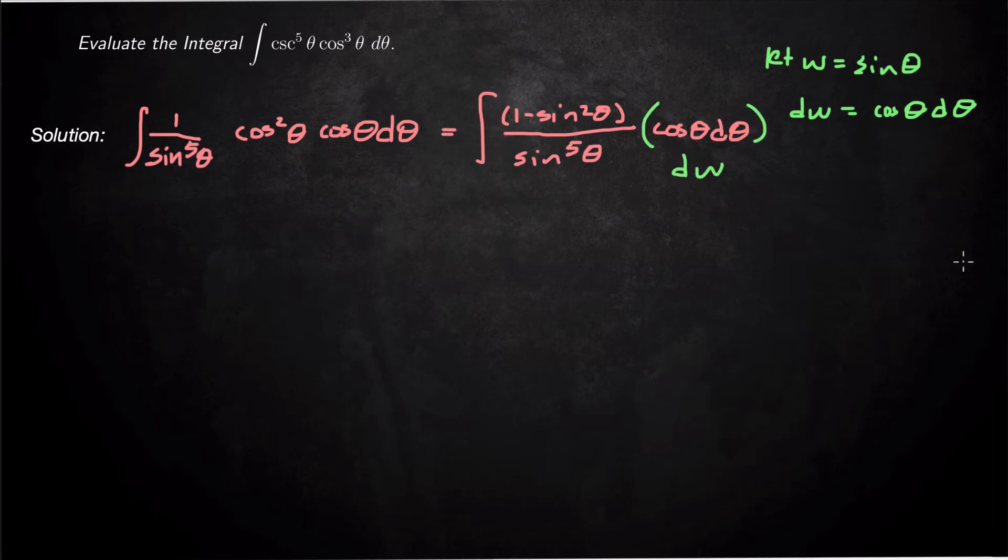And so this is going to be the integral of 1 minus w squared over w to the fifth. So this is going to be the integral 1 minus w squared over w to the fifth power dw. And simplify that with algebra first. We get 1 over w to the fifth power minus 1 over w cubed dw.